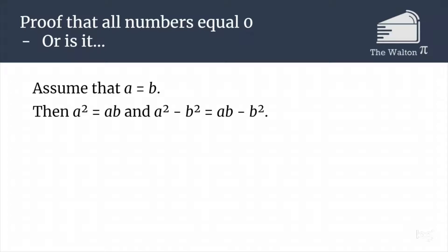Well, both of these sides can factor, so we get a plus b times a minus b is equal to b times a minus b.